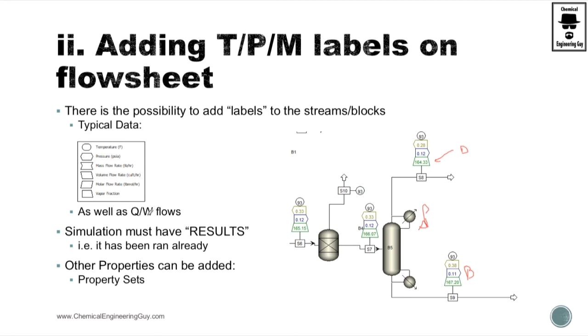As well, if you're also interested, you can also include the heat duty and workflows in the unit operations. So maybe you're interested in this. It's very cool because if it says Q equals zero, you know this is adiabatic, and if you have Q something, maybe here it states Q something, this will be the heat duty of the reboiler and the condenser.